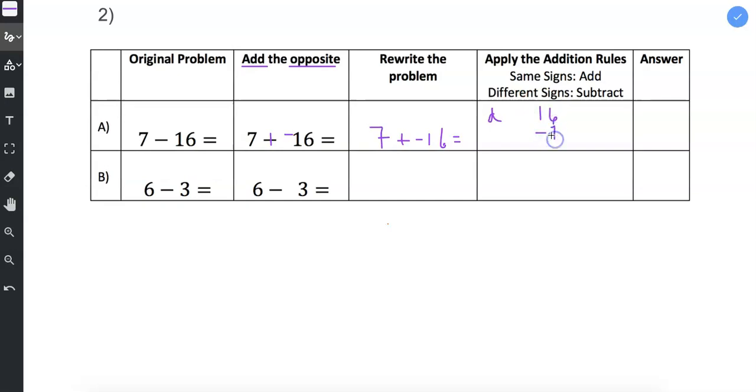So 16 minus 7. I realize that 16 is larger in terms of absolute value. Remember, absolute value is distance from 0. So I'm just thinking in my head of 16 as positive and 7 as positive. And 16 as a positive is larger than 7 as a positive. So that goes on the top when I'm subtracting. And then 16 minus 7, we get 9.